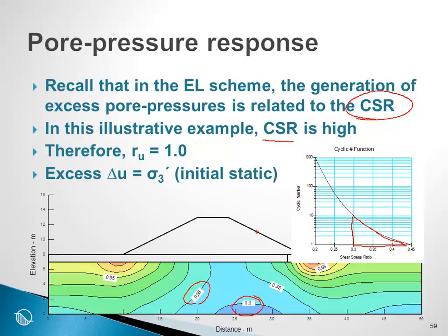We can tell already from the cyclic stress ratio that our R sub U values are likely 1, which means that our excess pore pressure, or the change in the pore pressure, will be set equal to the minor effective principal stress under initial static conditions.